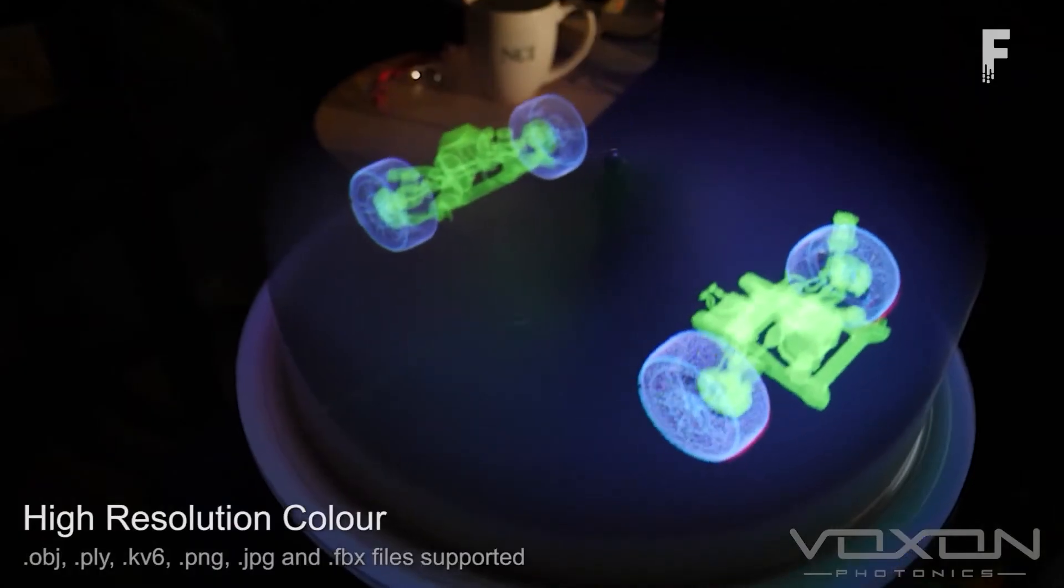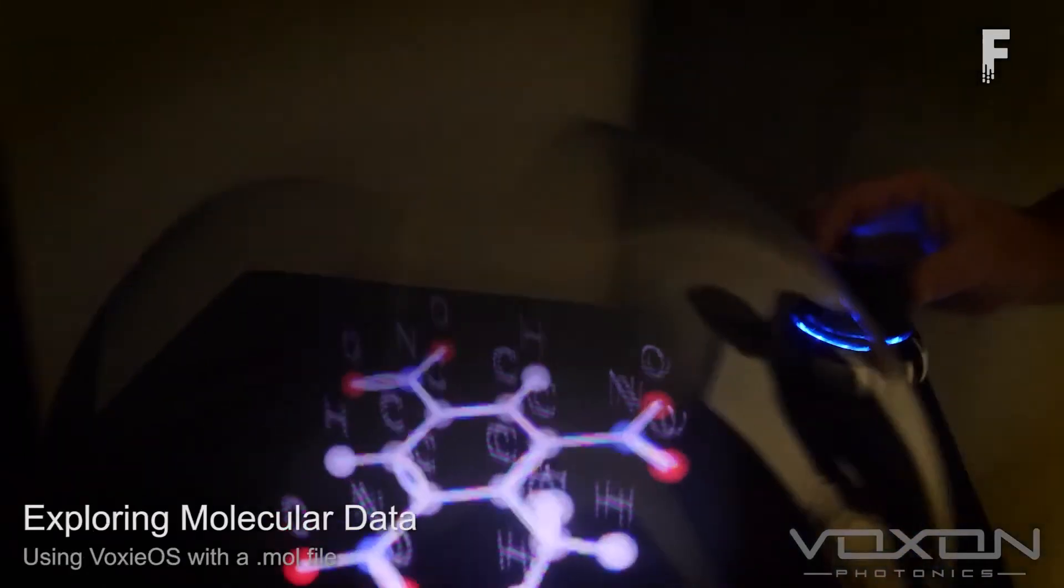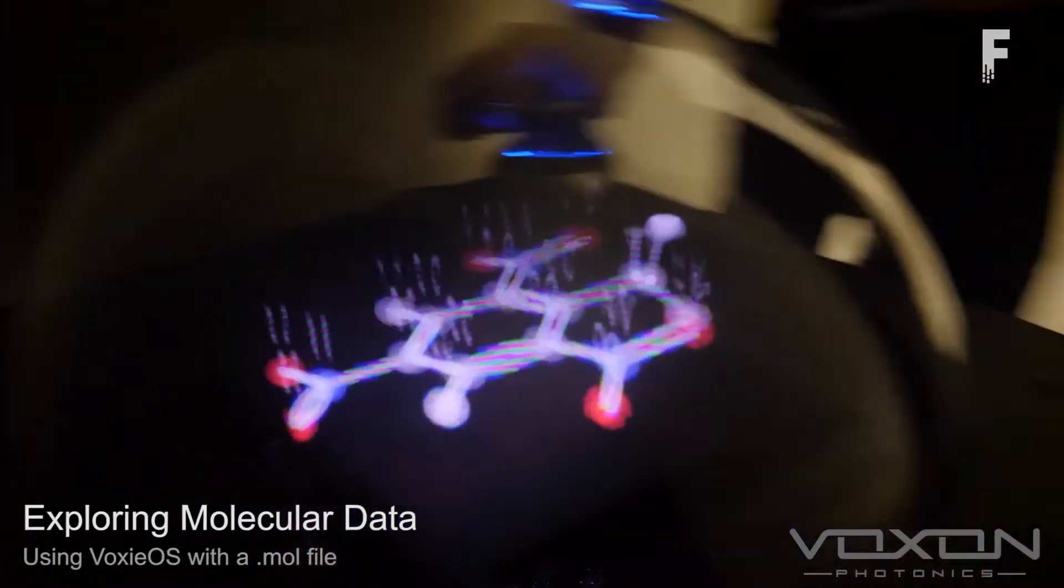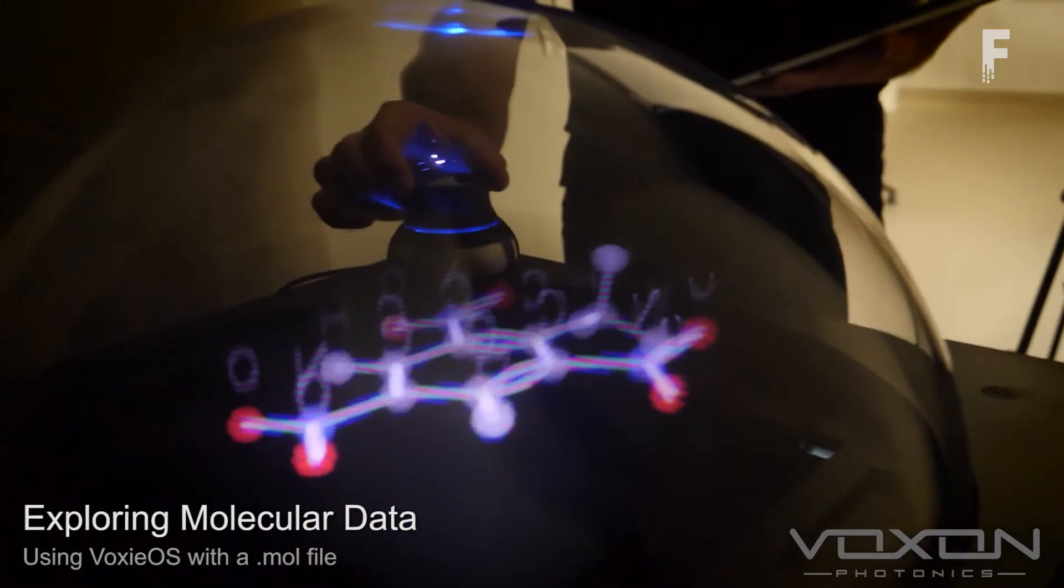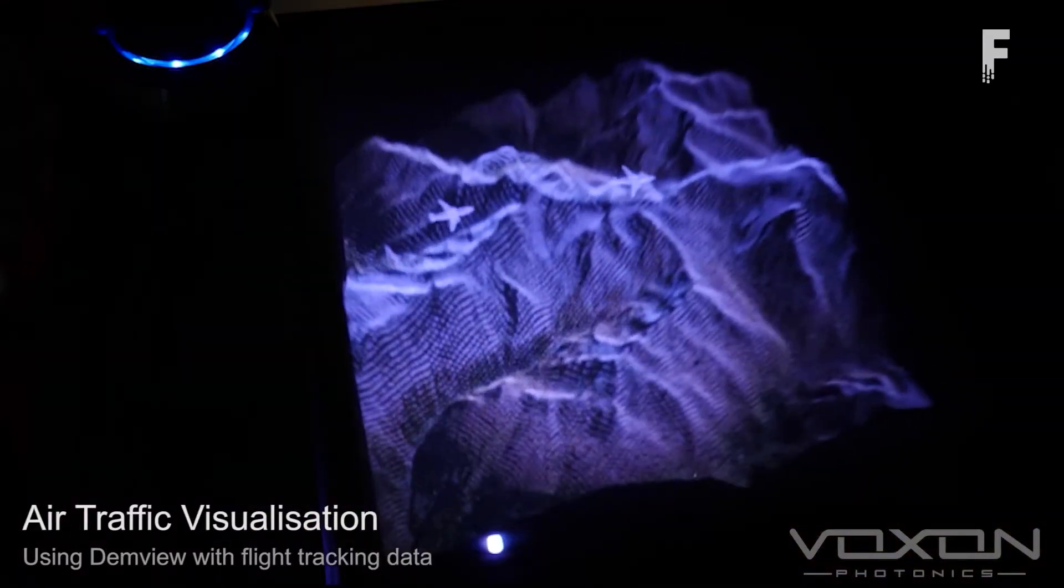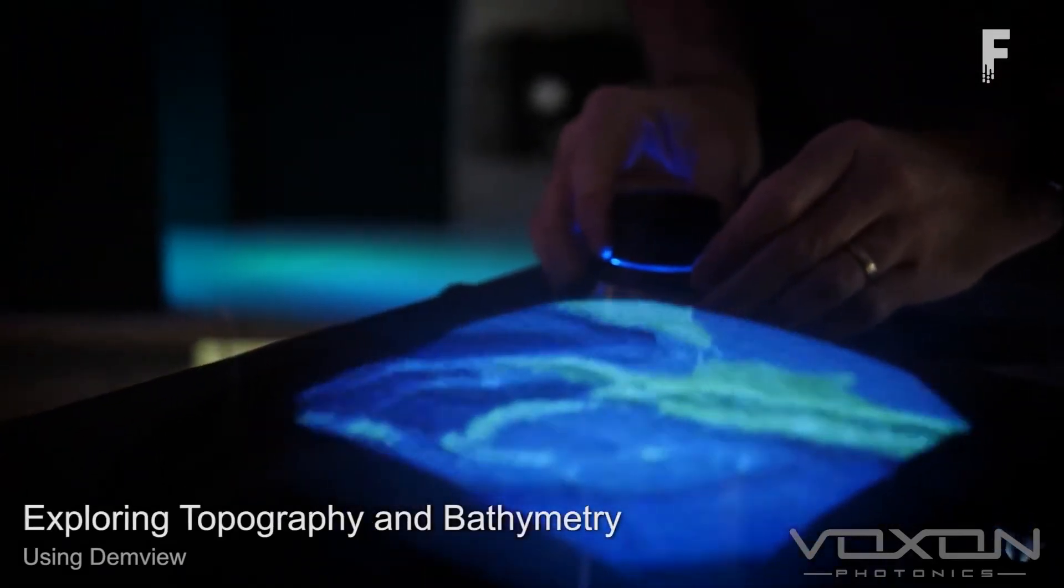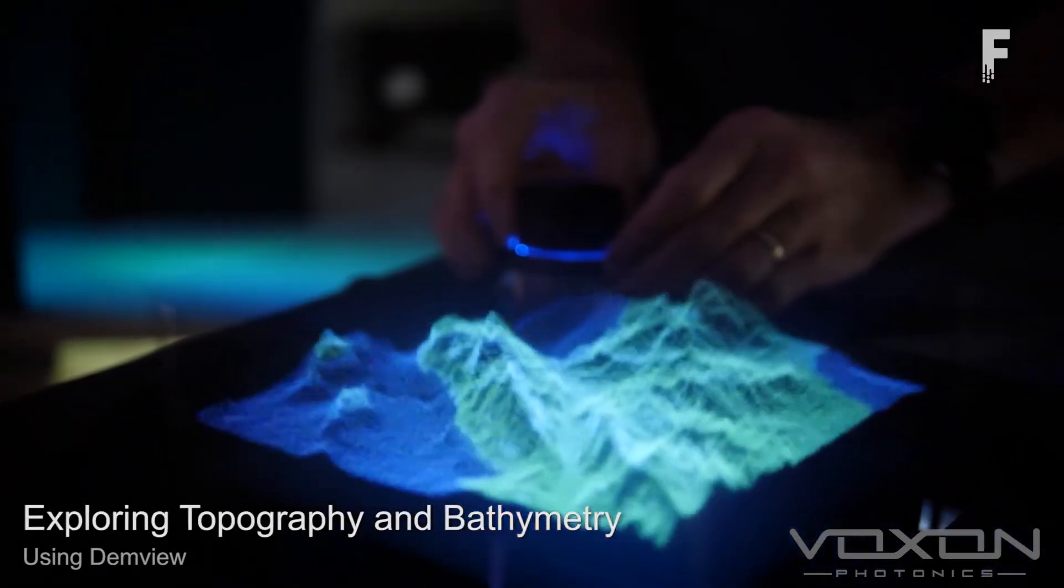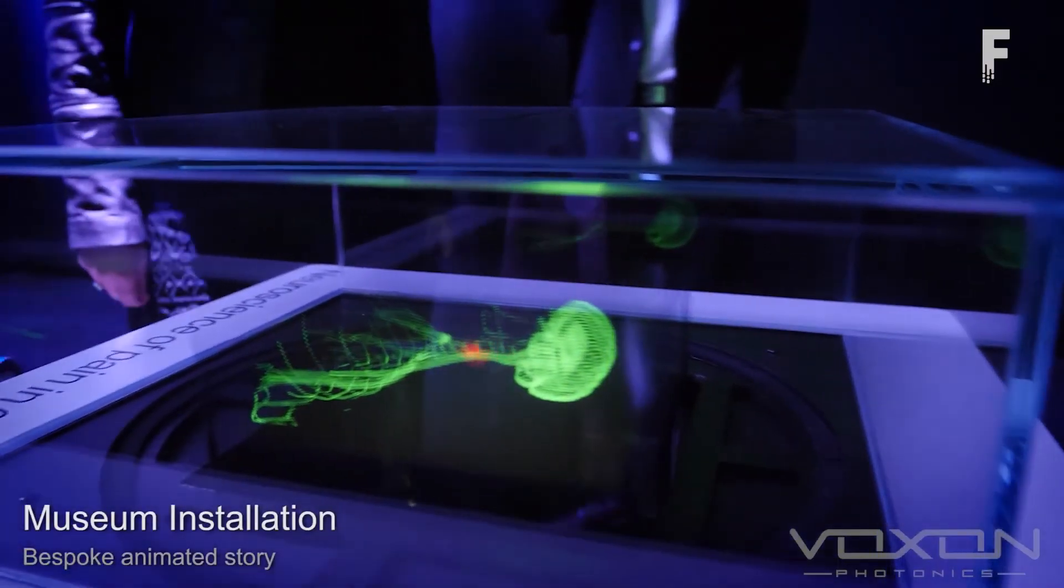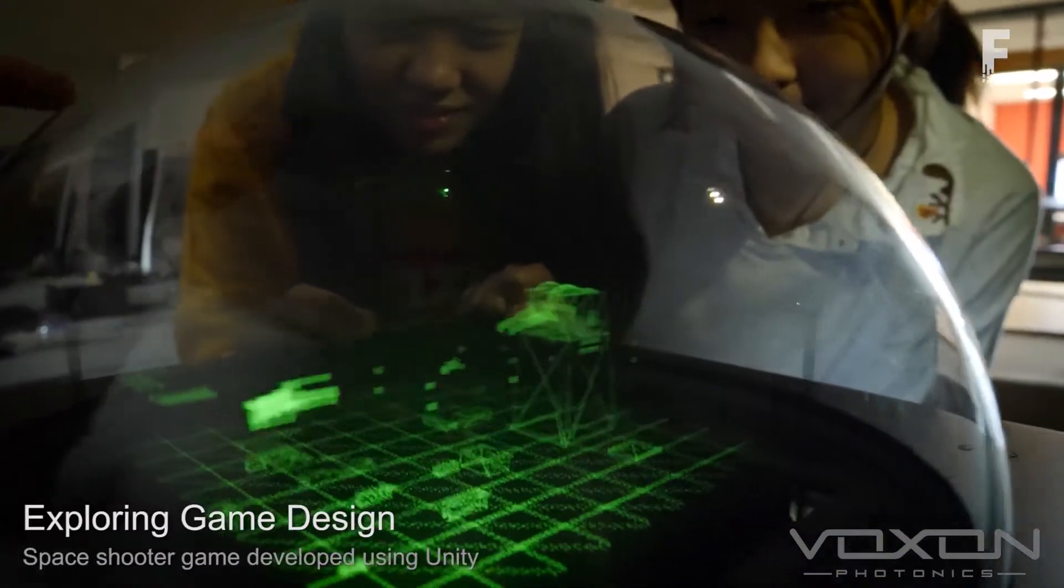The display achieves this by using 3D printed slices of light stacked in layers. The VX1 is housed in a square glass covered black cube, from which the image is seemingly projected onto thin air. To be more specific, the laser projects 1,400 slices of an image simultaneously by a vibrating mechanism and relies on persistence of vision for users to observe it as a real 3D object.